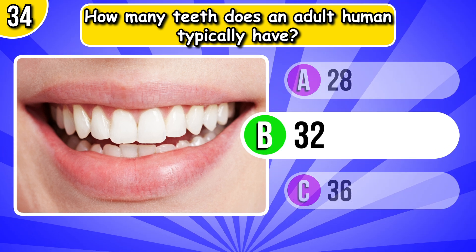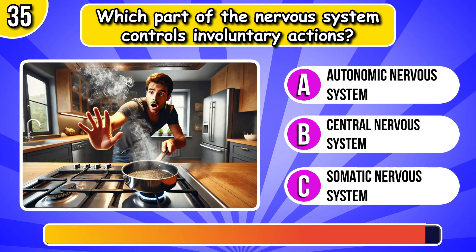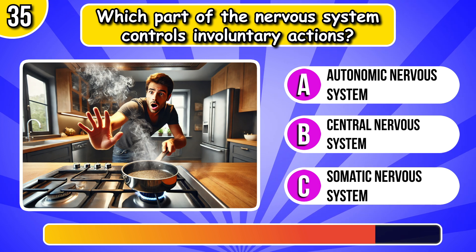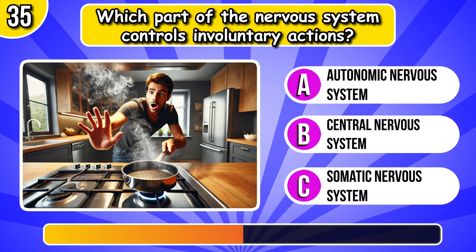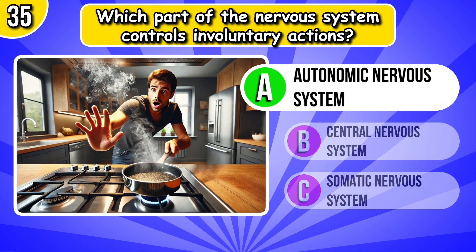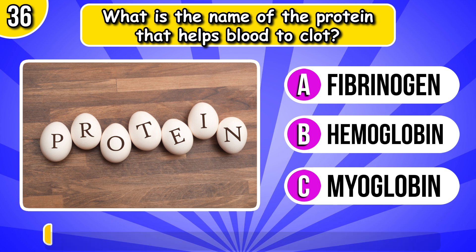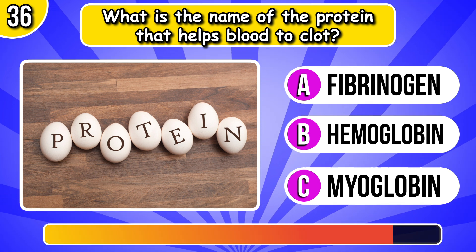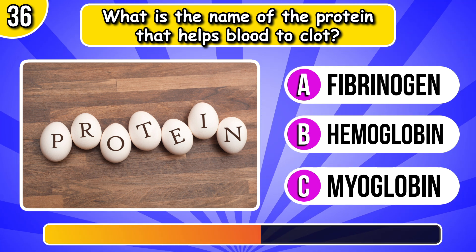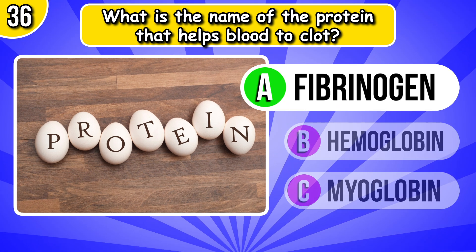Answer B, 32. Which part of the nervous system controls involuntary actions? It's autonomic nervous system. What is the name of the protein that helps blood to clot? It's fibrinogen.